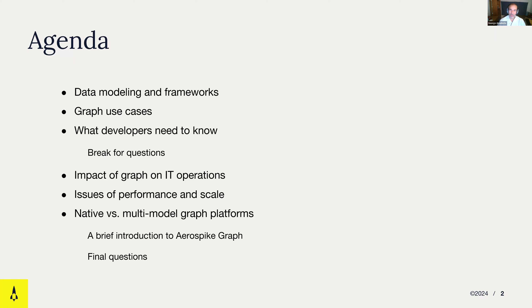But that basically means you won't be able to build new applications on top of that. All you can do with a graph processing framework is analytics on existing data. If you want to do more, you want a full-blown graph database — not just reads, but the whole deal: create, read, update, delete — everything needed to build applications on top of a graph data model.